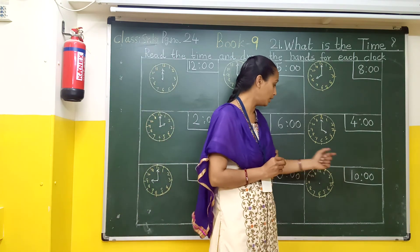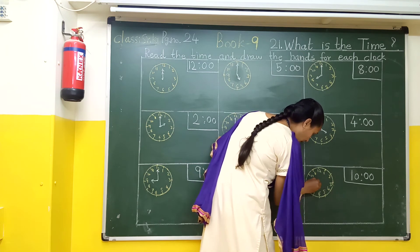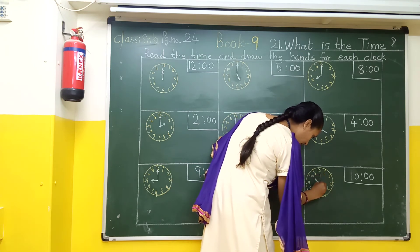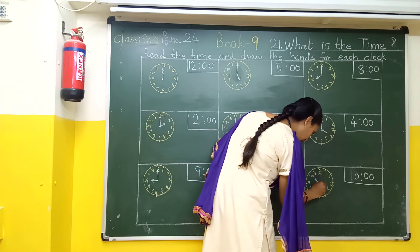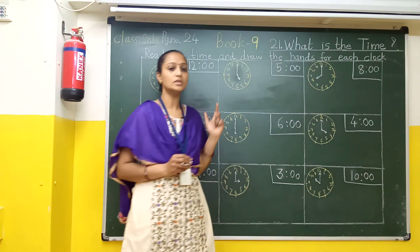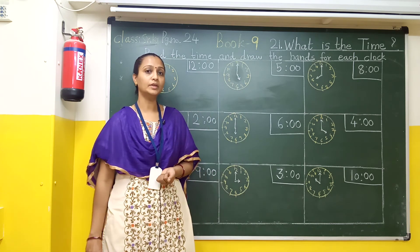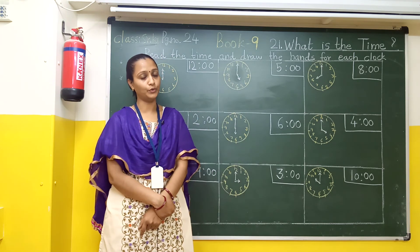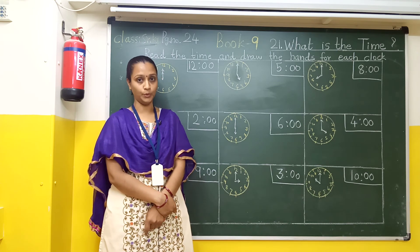After that we have to draw 10 o'clock. The small hand is on 10 and the big hand is on 12. In this way you can draw this activity. After that, tell your mama to take a photo and send it to me. Thank you students and parents. Stay safe at home.